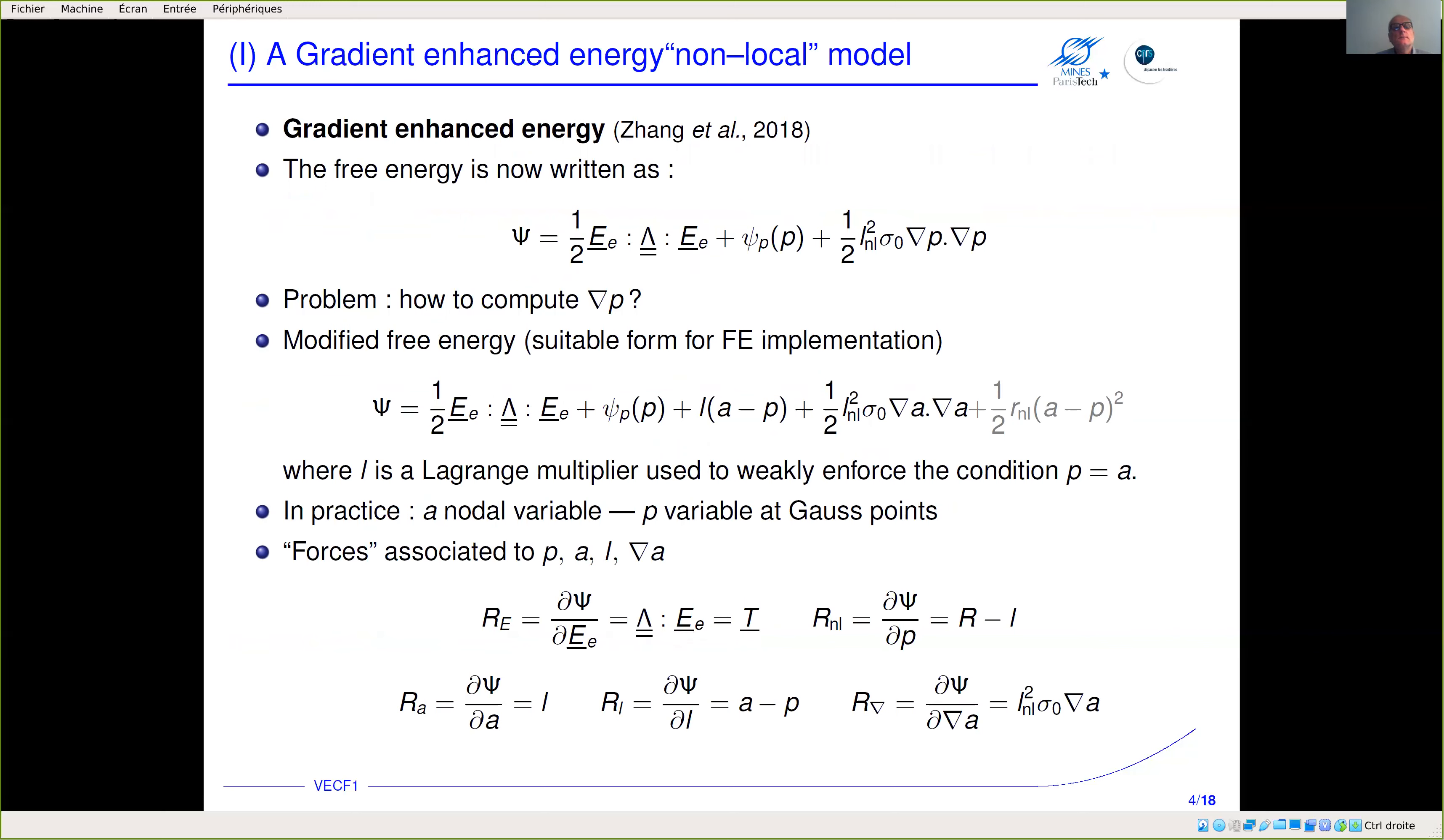Here are some equations to introduce the model. We write the free energy in the following form: the classic elastic part, the standard plastic part, and we add a part in which the gradient of the plastic strain plays an important role to prevent too high a plastic strain gradient. The problem is how do we compute the gradient of p, because p in standard FE procedures is known at Gauss points.